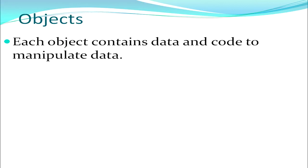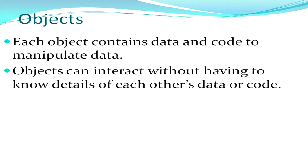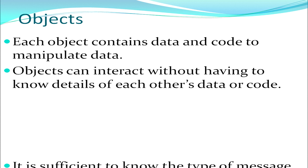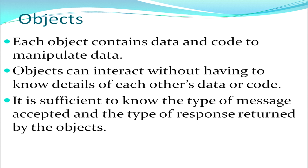Each object contains data and code to manipulate that data — the code being functions defined in that particular class. Data can be accessed only by those functions of the class. Objects can interact without having to know details of each other's data or code — that is the essence of OOP. Each object need not know what the other object is having; it just needs to know the type of message accepted and the type of response returned. Each object is independent of each other.